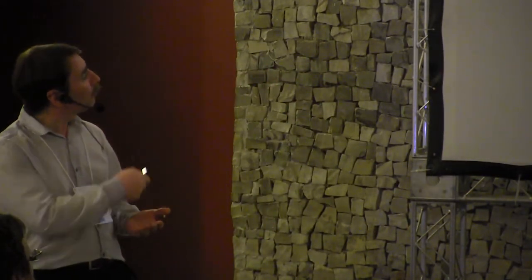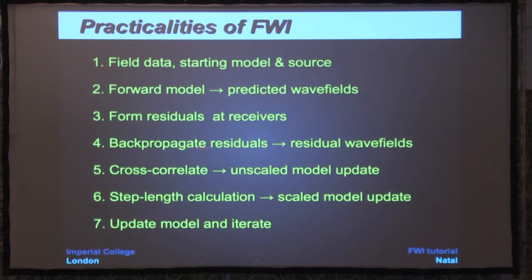Just as a reminder: field data, the starting model, and the source. We've got the starting model and the source, we're wanting to do a full model, we're forming residuals, back-propagating, cross-correlating in some form. There's a step length calculation which involves another forward run, rather like stage two. And then we take the updated model and iterate.